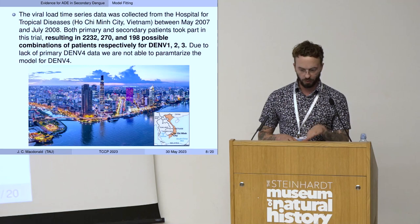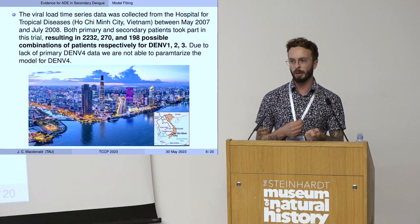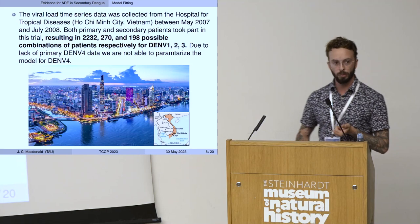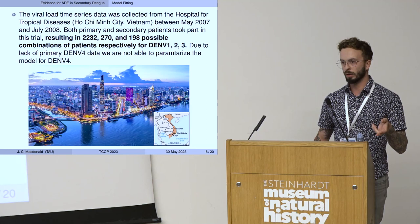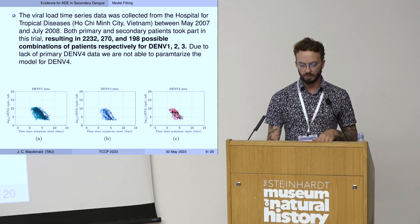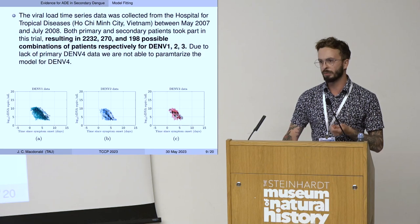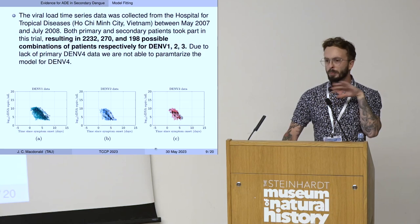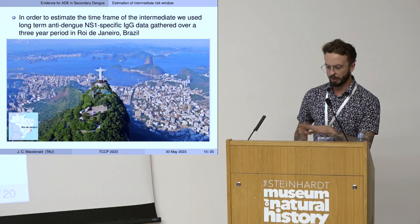The viral load time series data was collected between 2007 and 2008 in Vietnam. Considering all possible combinations of primary and secondary infections for each serotype, we have 2,232 for dengue 1, 270 for dengue 2, and 198 for dengue 3. We lacked primary patient data for dengue 4. In the time series plots, the darker lines are primary infection and the lighter are secondary. We go back to minus five days because on median, the mosquito bite causing infection occurs approximately five days before symptom onset.